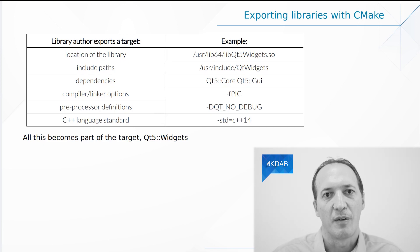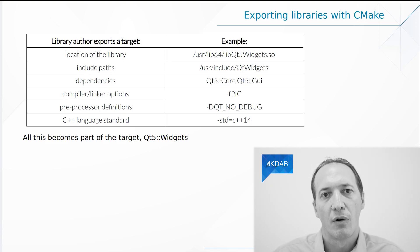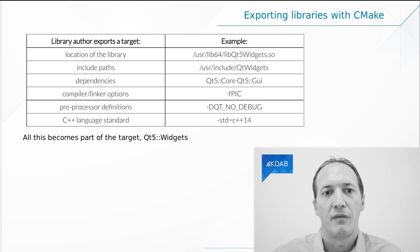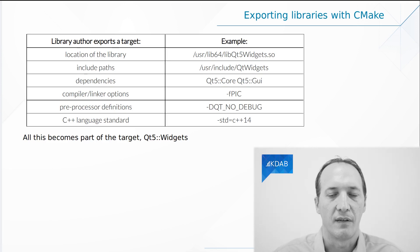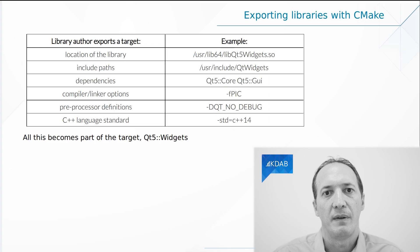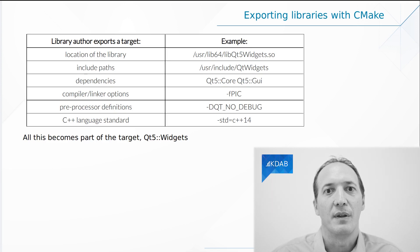Also, the C++ language standard that should be used — these kind of things. All of this becomes part of the target, in this example Qt 5 Widgets. And by simply linking to this target, we benefit from all of these settings: the location of the library, the include paths, and so on. And this is why in the previous video, when we were linking to Qt Widgets, we didn't have to specify any of these things. They just came for free as part of the target link libraries line.